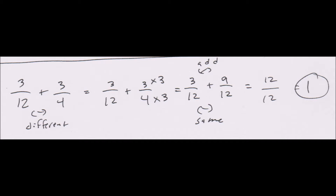Nine-twelfths and three-twelfths now have the same denominator, so you can add them: nine plus three is twelve, giving you twelve over twelve. If you get the same number on the top and bottom of a fraction, that equals one — it's always one. The most correct answer is one, but if your teacher wants you to keep the fraction, it would just be twelve-twelfths.